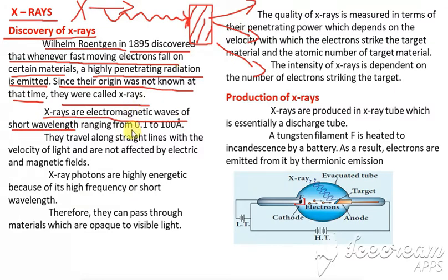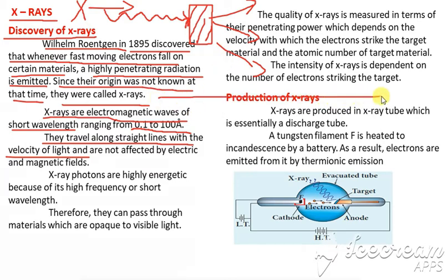X-rays have a wavelength in the range of 0.1 to 100 Angstroms. They travel in a straight line with a velocity equal to the velocity of light.